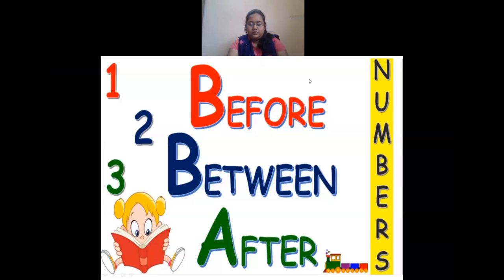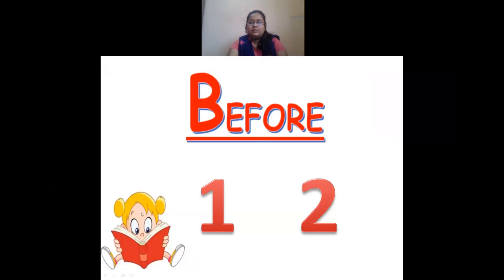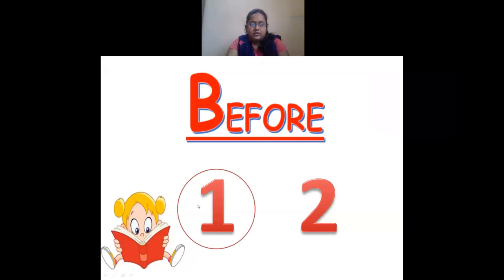We'll be studying what is before, between, and after numbers today. First, we'll see what comes before a number. Here I have two numbers: 1 and 2. To see what comes before 2 — before means the number that comes first. Here the number that comes first is 1, so 1 comes before 2.